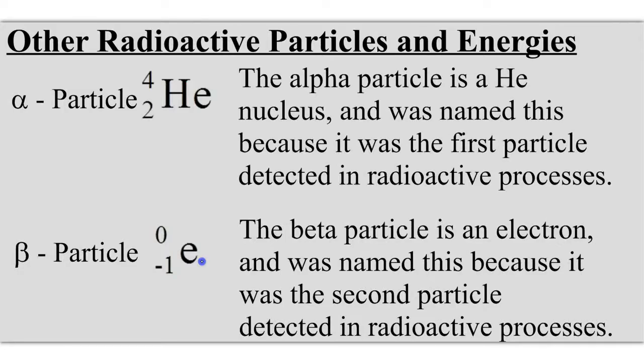So other radioactive particles you should be familiar with. First, the alpha particle. 4 over 2 helium, also known as a helium nucleus, is called an alpha particle. So alpha particle and 4 over 2 helium, or helium nucleus, are synonymous with one another. A beta particle is the same thing as a 0 over negative 1 electron. So when we state a beta particle has been emitted, then we would write a 0 over negative 1 electron to represent that.